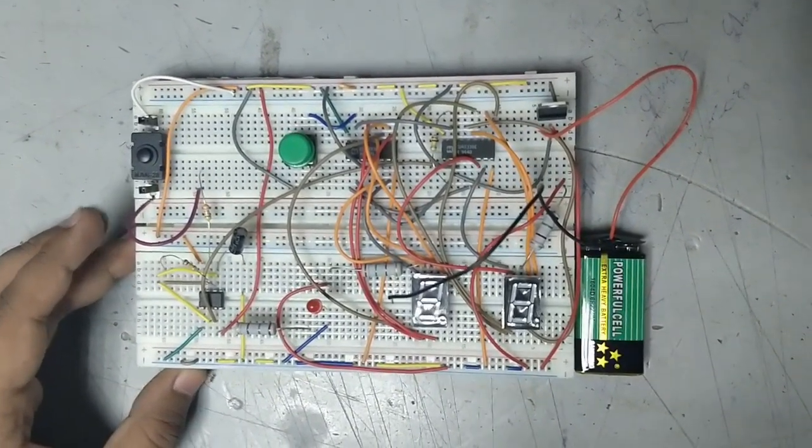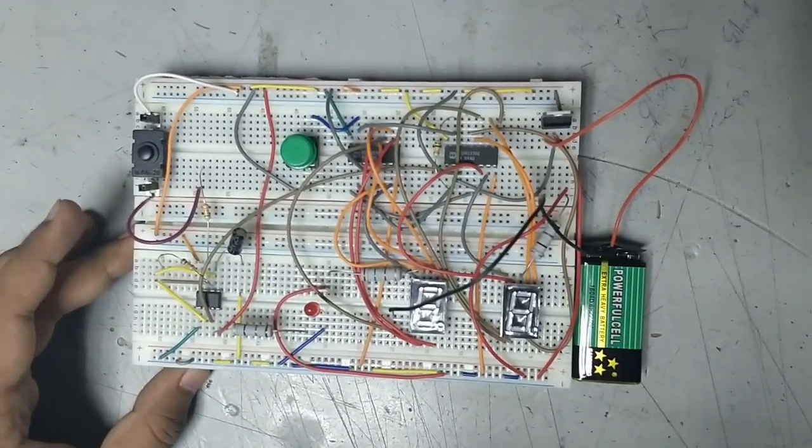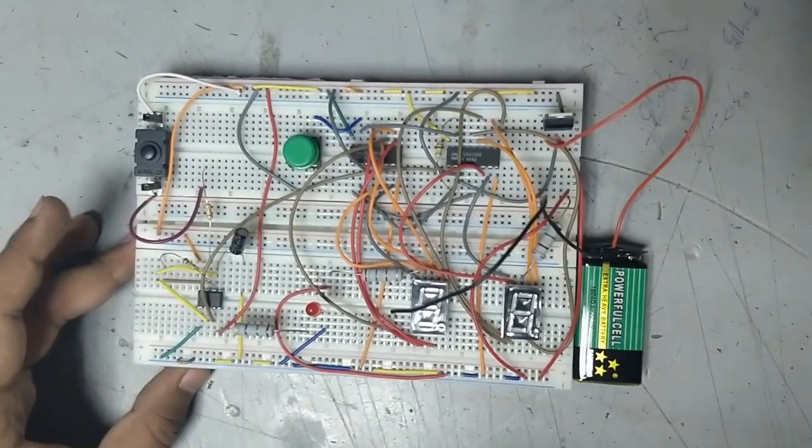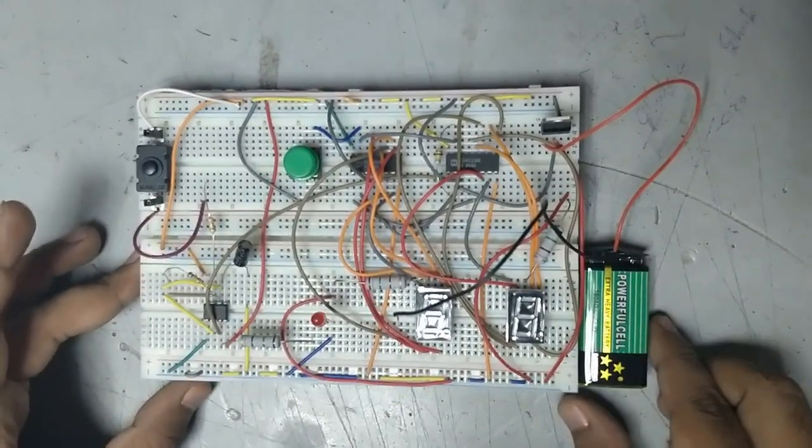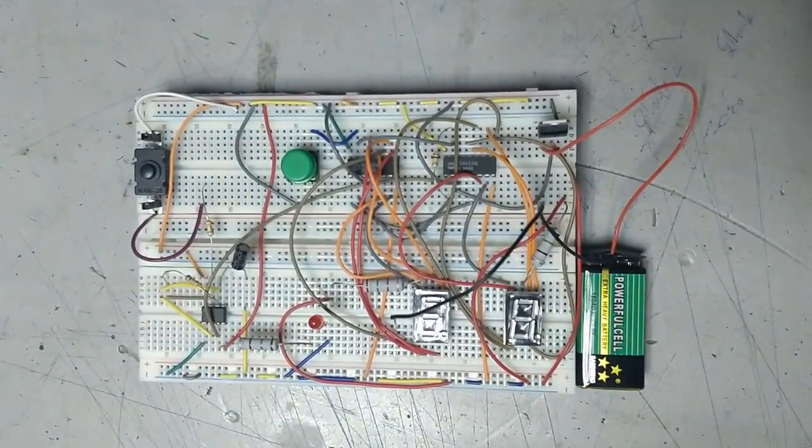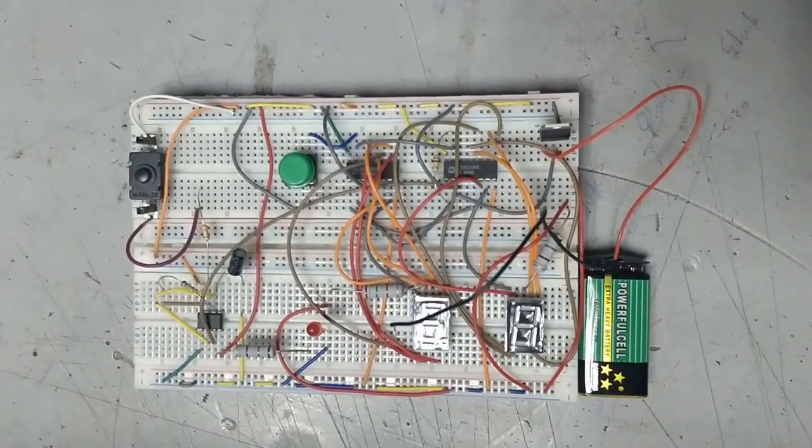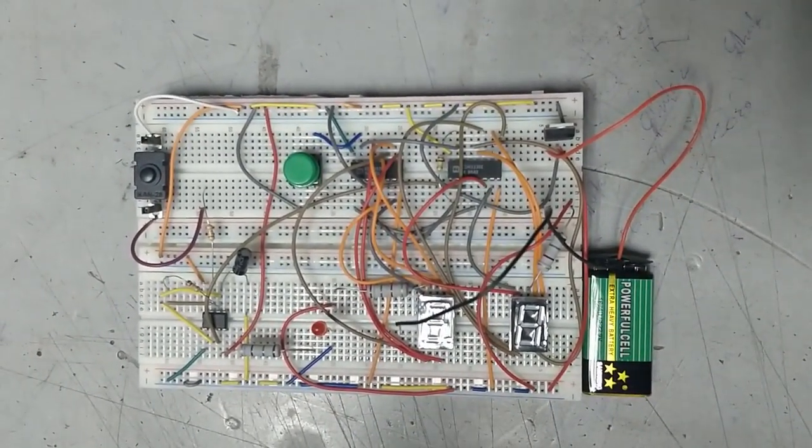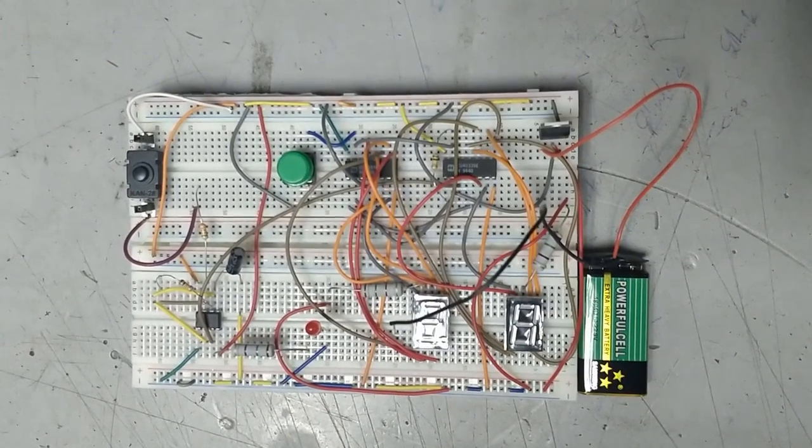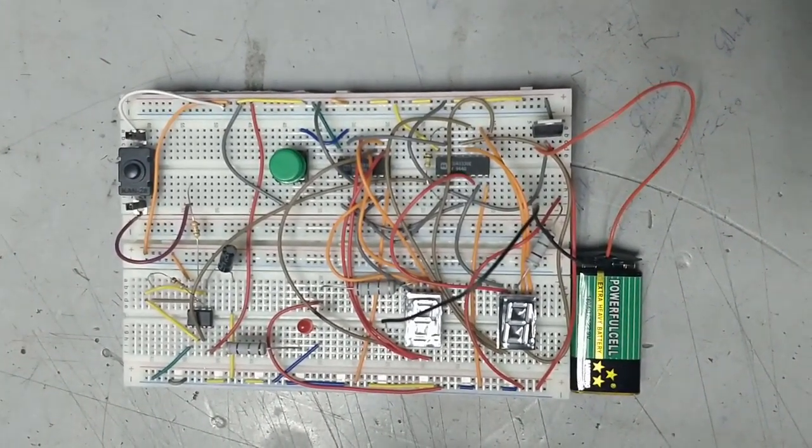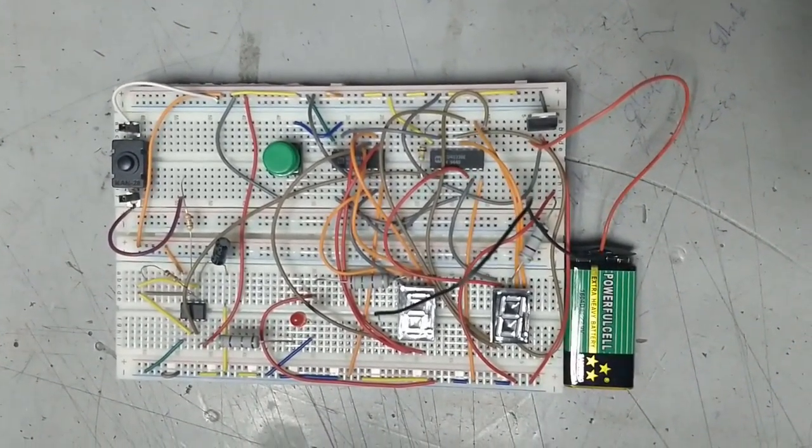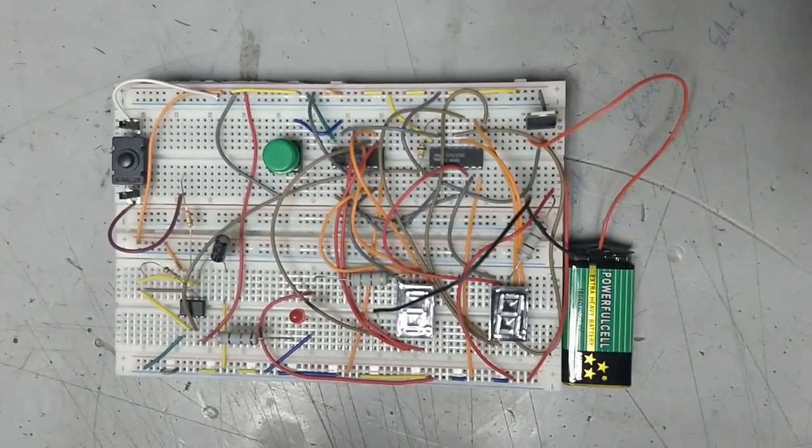two common cathode seven-segment displays, and some resistances of 150 ohm, 100k, 33k, and 56k. One capacitor of 10 microfarad, one on-off switch, one push button, one breadboard, one 9 volt battery, one battery connector,